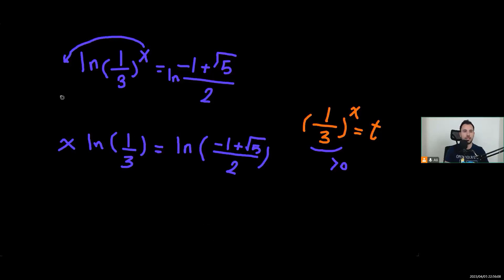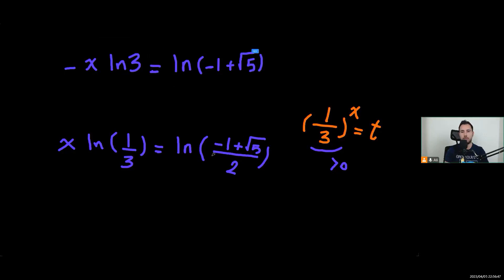So the question is almost over, we just need to simplify it just a little more. Instead of ln 1 over 3, I could write negative ln 3. So I'm going to have negative x times ln 3 equals, and to simplify this I'm going to write it as ln of negative 1 plus square root of 5 minus ln 2 using logarithm quotient rule.